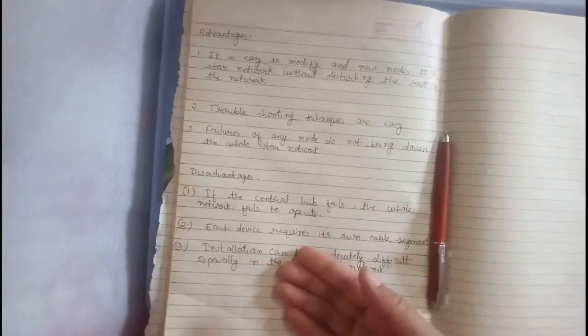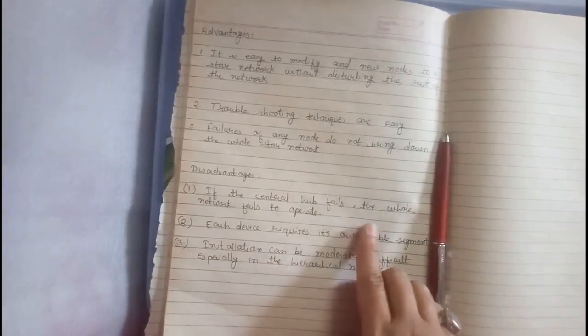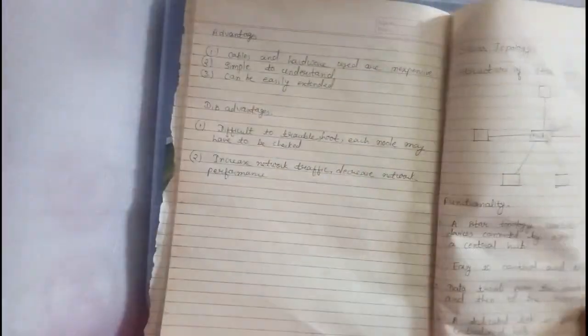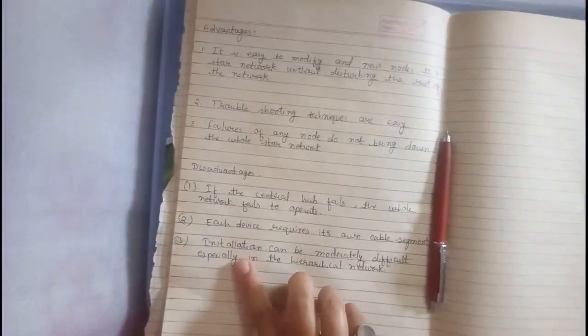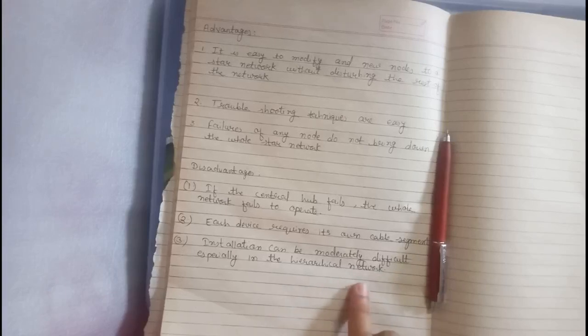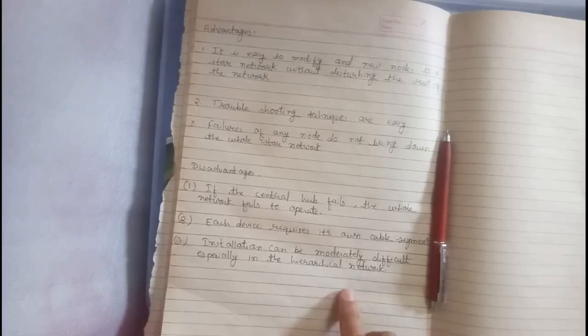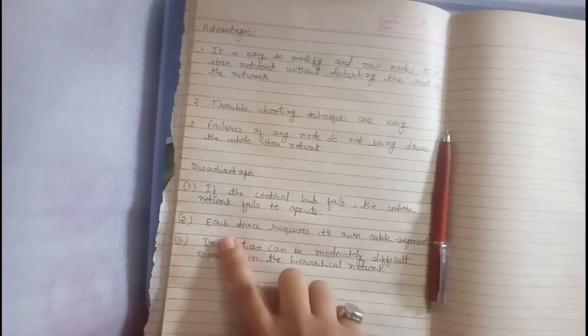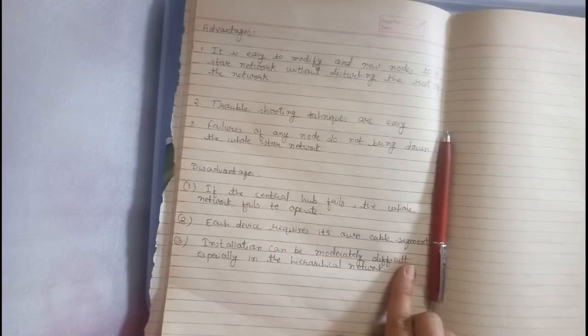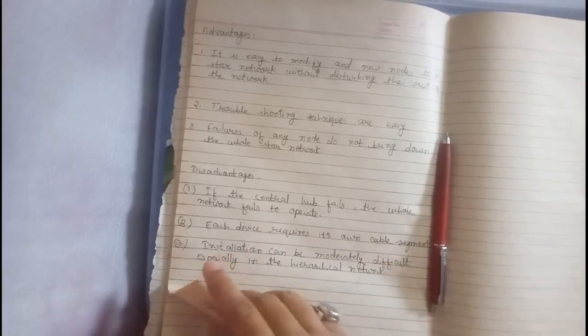Now, there are some disadvantages also. If the centralized hub fails, the whole network fails to operate. It means central hub or switch if fail, then whole network will fail. Third disadvantage, installation can be moderately difficult especially in the hierarchical network. If there are many number of star network connected to each other, then there may be some difficulty in installation. Each device requires its own cable segment. So, this is all about star topology.